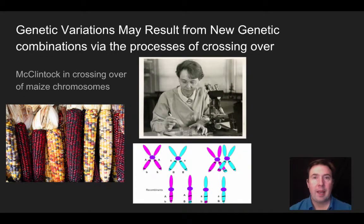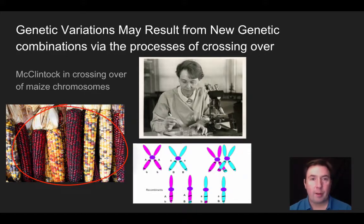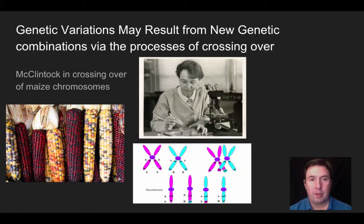Now let's look at some of the sources of variation, including crossing over creating new variants. This discovery was recognized by Barbara McClintock when she studied corn — the Native American corn, or dried maize, that you'd see on tables at Thanksgiving. Not all of the kernels are the same, suggesting these individual kernels come from a variety of different sources. McClintock studied them down to the gene level and noticed there were crossing over events, which is why we give her credit.